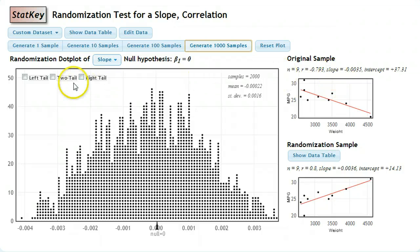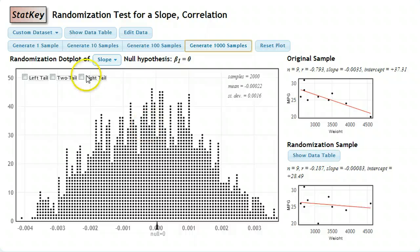So like any hypothesis test, I need to decide if it's two tail or one tail, left or right. The null is that the slope is zero, and our alternative is that the slope is not zero. So it is a two tail test.